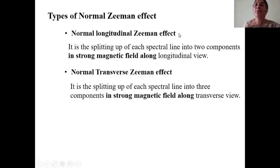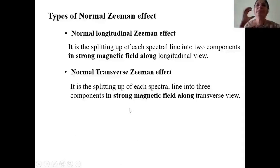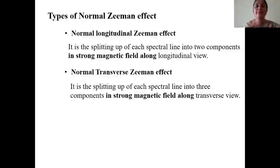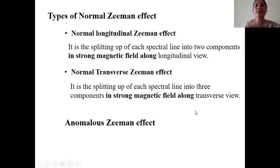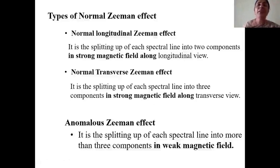Longitudinal Zeeman effect means viewing the spectrum along the direction of the magnetic field, and each line splits into two components. Normal transverse Zeeman effect means viewing the spectral lines in a direction perpendicular to the magnetic lines of force, and each line splits into three components. The anomalous Zeeman effect occurs with a weak magnetic field. In today's class we will discuss only the normal Zeeman effect.